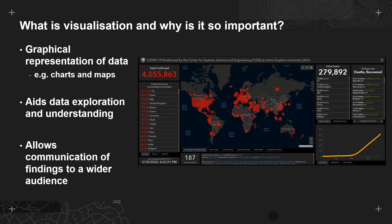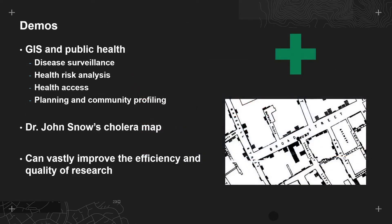For example, the John Hopkins dashboard shown on the right of the slide. Given that public health has become such an important topic in recent times, I'm going to focus on it for my demonstrations today. One of the earliest and perhaps overused examples of GIS in the public health and epidemiology realm is the cholera map created by Dr. John Snow in 1854. This map was used to visualise disease clusters and their proximity to water pumps and is a great example of how good visualisations can aid communication.